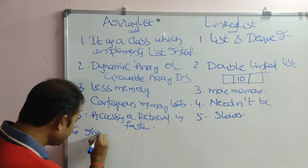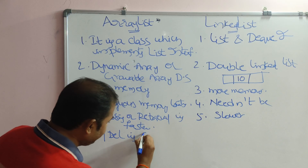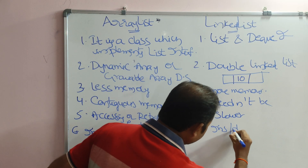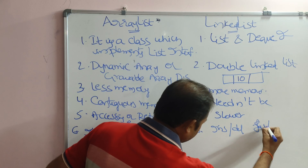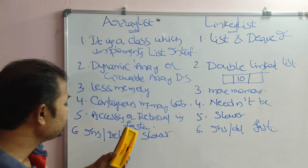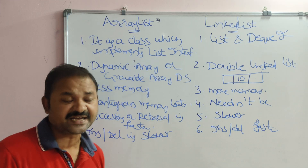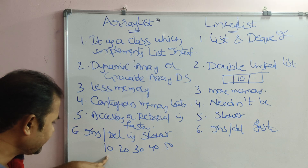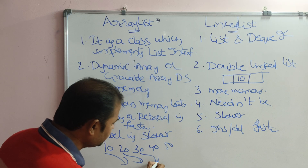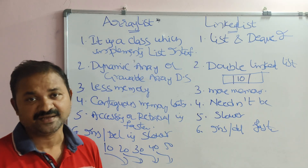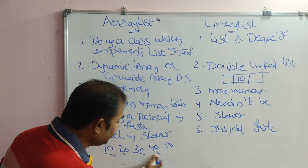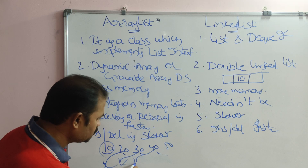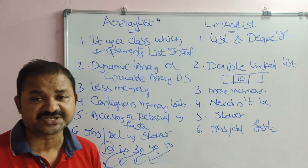Insertion and deletion operations are slower in ArrayList because too many shiftings are needed. For example, with elements 10, 20, 30, 40, 50 — if you insert at position 0, all elements must shift one position to the right. If you delete 10, all remaining elements must shift one position to the left.